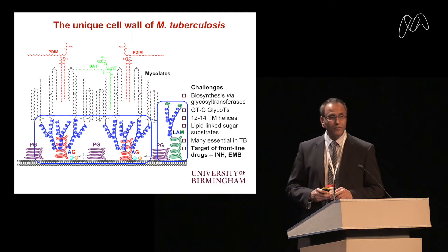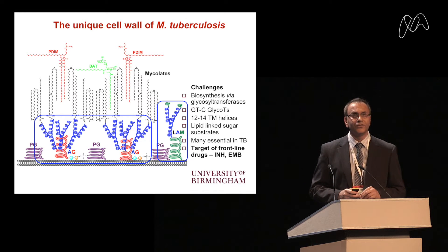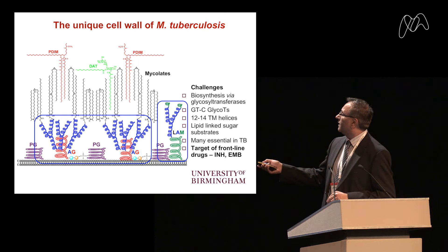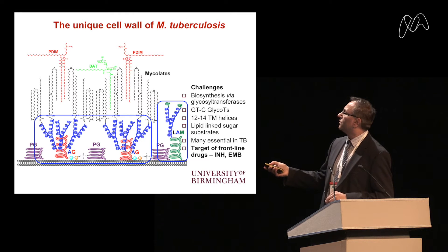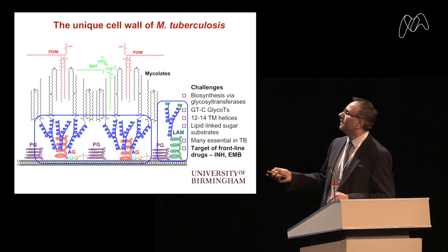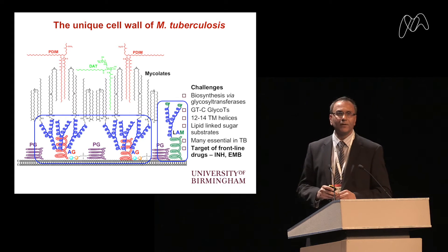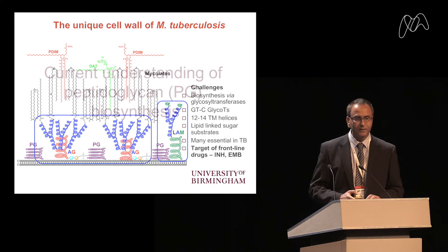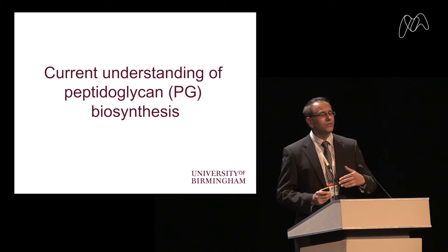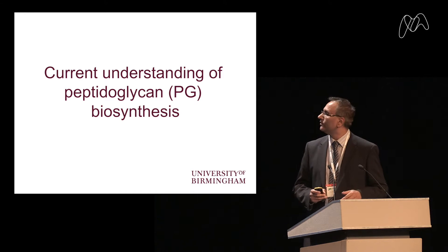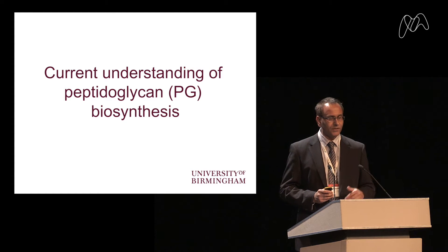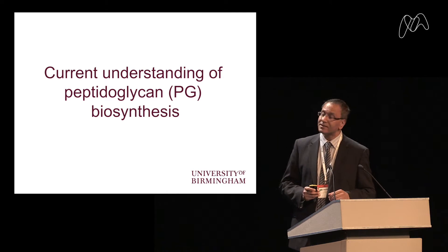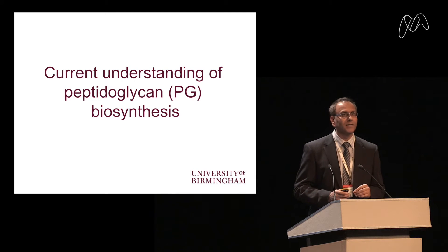This is even more important when we consider some of the frontline agents used to treat tuberculosis. We have isoniazid, which targets aspects of mycolic acid biosynthesis, and we have ethambutol, which targets aspects of arabinan synthesis in both lipoarabinomannan and arabinogalactan. What I'd like to do now is go through systematically some of the knowledge we've gained over the last few years in terms of how we build up the cell wall, starting with peptidoglycan biosynthesis.